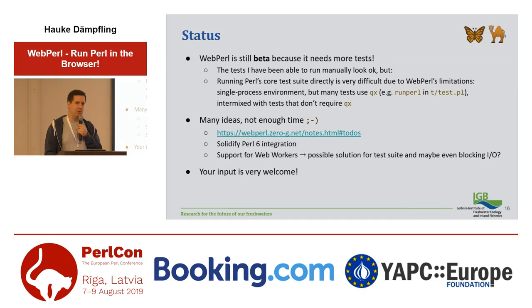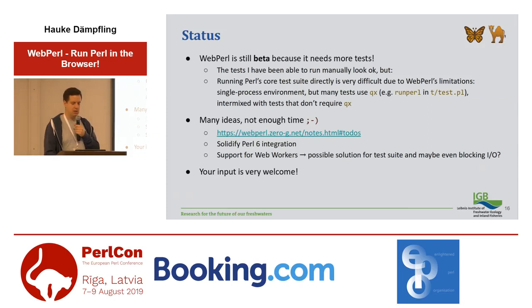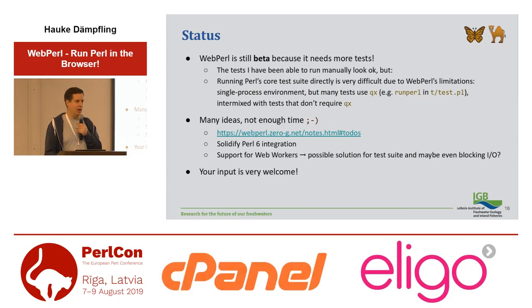During the course of a project like this you have a lot of ideas — I've written some of them down. Some of the next things I want to work on: integrating Perl 6 more tightly, and I've also been thinking about whether WebWorkers — a sort of JavaScript threading system — might be a possible solution to some of the things I mentioned. For example, it might be a way to support QX, and maybe I can even do some blocking I/O that way. I can't really operate in a vacuum — the more feedback I get, not just questions and complaints but the kinds of things you might want to use this for, the better I know what to focus on. Feel free to talk to me or send me an email anytime.